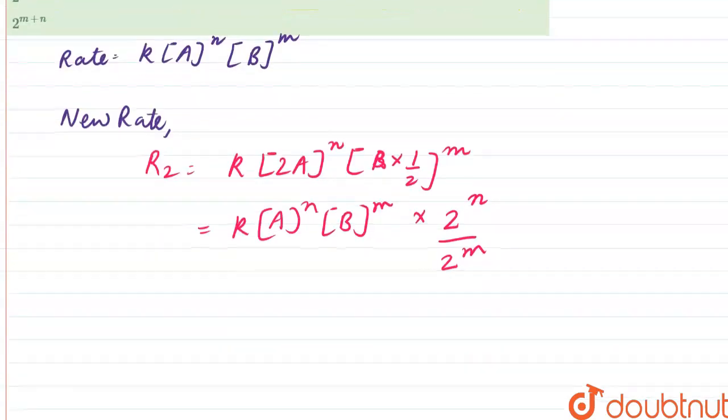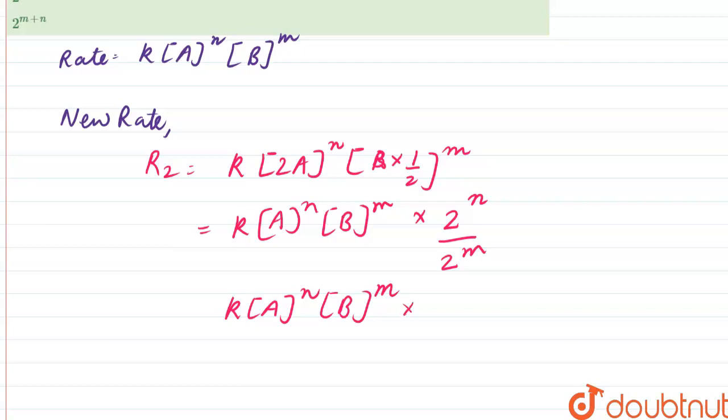So if we say R2 upon R1, it will be K times A raised to power N times B raised to power M times 2 raised to power N minus M.